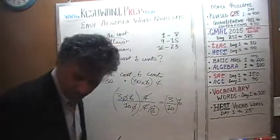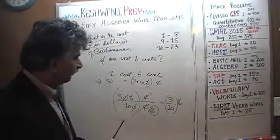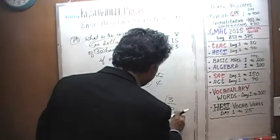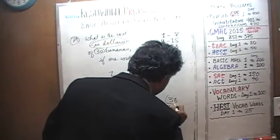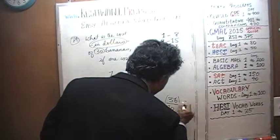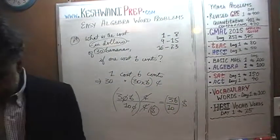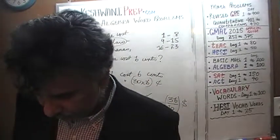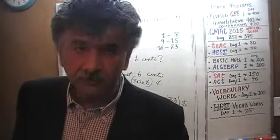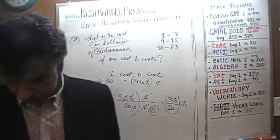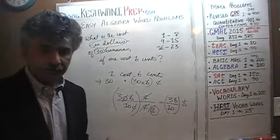B should be under parentheses also. The answer is 3 tenths B, or if you like, 3B over 10 dollars. Let's do the next one, shall we?